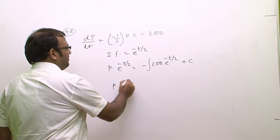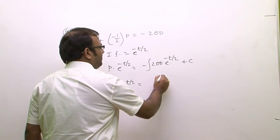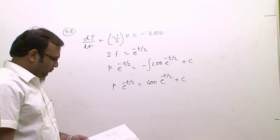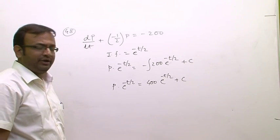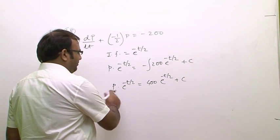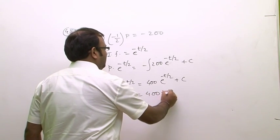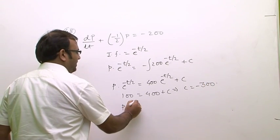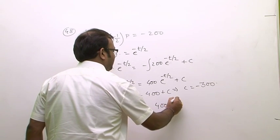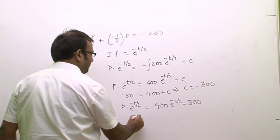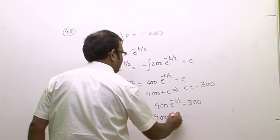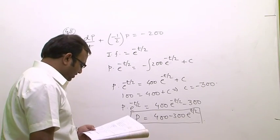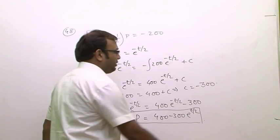Integrating gives P·e^(-t/2) = 400·e^(-t/2) + C. Using the initial condition P(0) = 100, we substitute t = 0 and P = 100 to get 100 = 400 + C, so C = -300. The population function becomes P = 400 - 300·e^(t/2), which matches option 1.